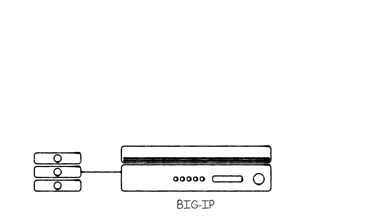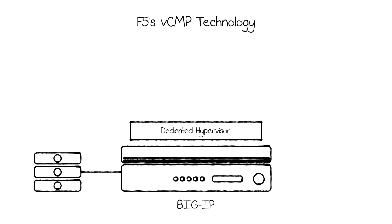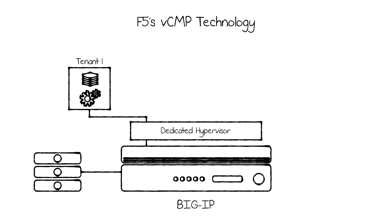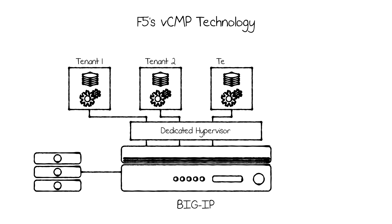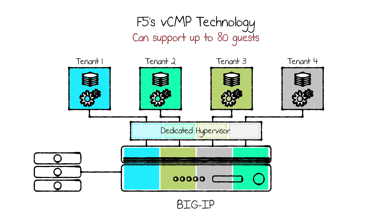Another option is F5's VCMP technology. This uses a dedicated hypervisor to partition F5 appliances and Viprion platforms into highly isolated and secure tenants, each with dedicated memory and CPU resources. Guests can run different versions of the BigIP software and can be rebooted or upgraded without affecting the rest of the tenants. The largest platform supports up to 80 guests.